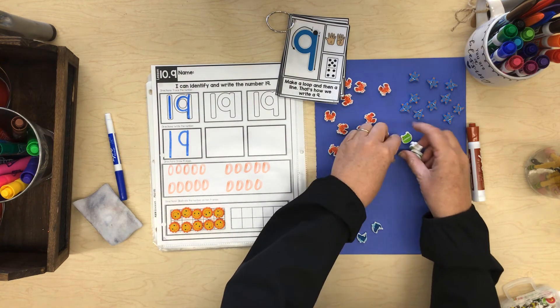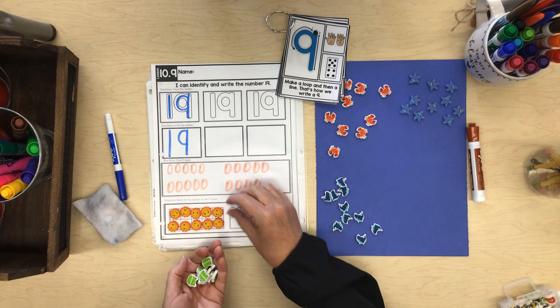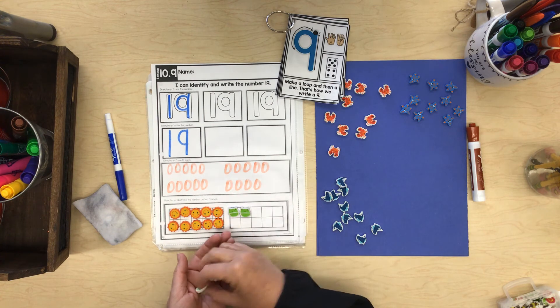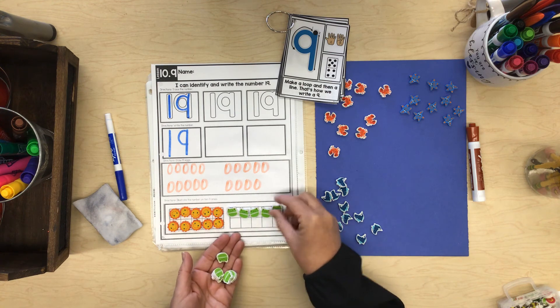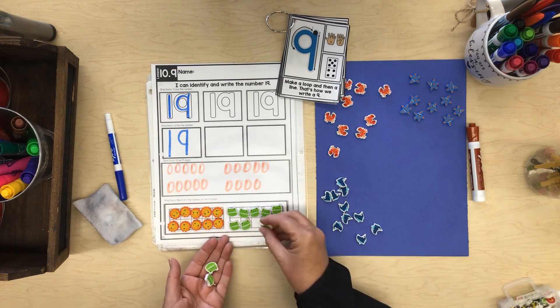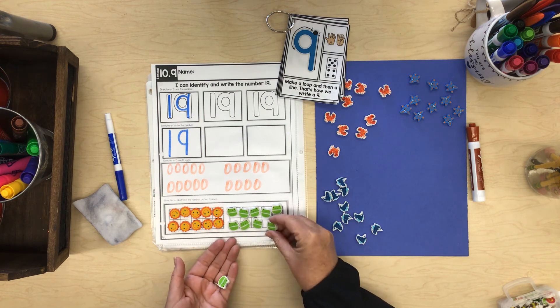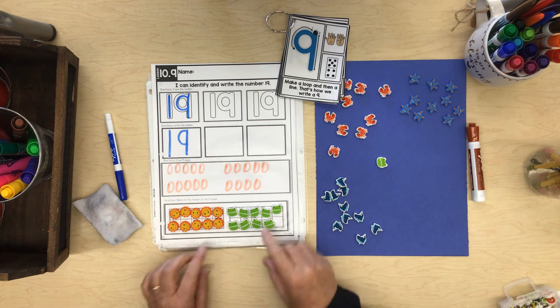Let's add some frogs. 11, 12, 13, 14, 15, 16, 17, 18, 19. 10 and 9 more make 19.